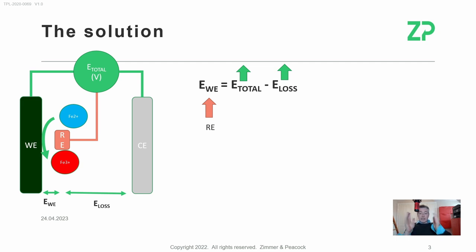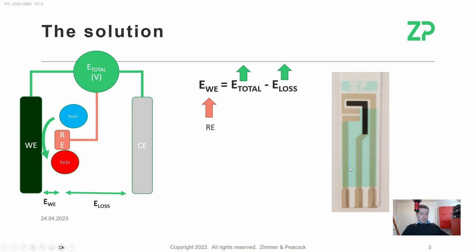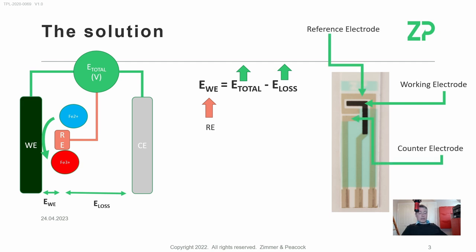The solution: one day I set up the experiment, the next day I set up the same experiment but the counter electrode is slightly further away and my data changes. But if you bring the reference electrode into play, if that counter electrode moves it doesn't matter, because I'm still measuring the potential at the reference electrode close to the working electrode and can adjust for that difference. That's why on a ZP screen-printed electrode you'll find a working electrode, a reference electrode, and a counter electrode — because we're running in three-electrode mode.